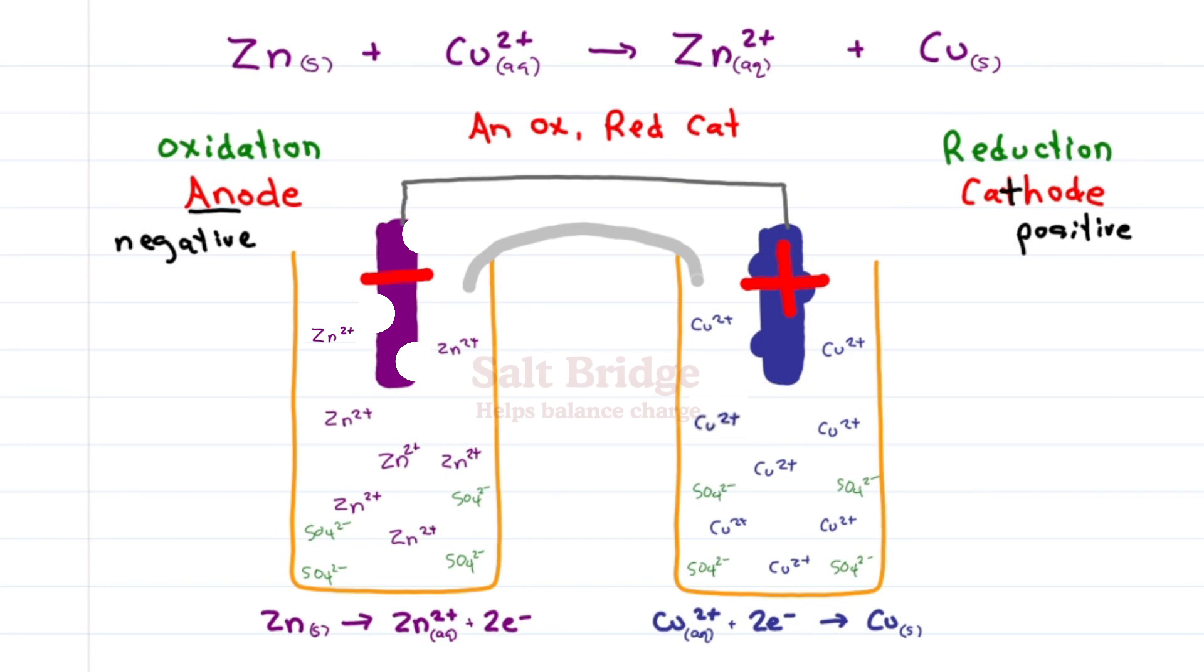We add a salt bridge. A salt bridge is a semi-permeable membrane that allows non-reactive ions to flow. For example, sodium nitrate. Every time a negative electron flows out of the zinc solution, a negative nitrate flows in, keeping the charge neutral. Every time a negative electron flows into the copper solution, a positive sodium ion comes into balance.